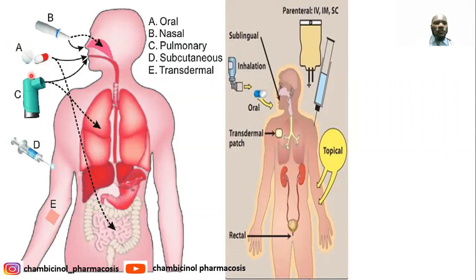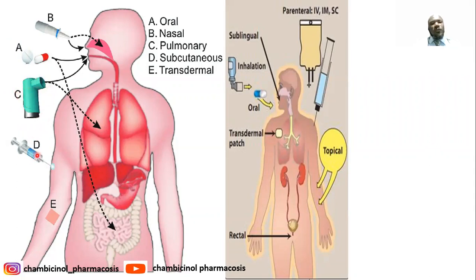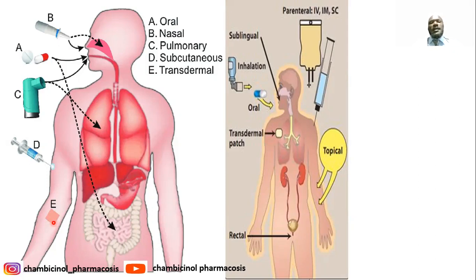We also have the pulmonary route, via respiration, where the drug is taken using a nebulizer or pressurized metered-dose inhaler. Subcutaneous administration will bypass first-pass metabolism. Transdermal means applying via transdermal patches, especially for highly lipid-soluble drugs, to sustain the release action — applied topically to achieve systemic circulation, very important especially for highly lipid-soluble drugs.